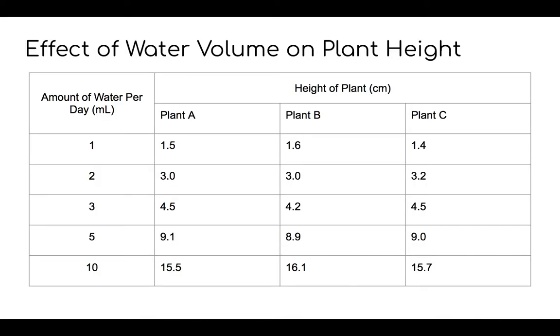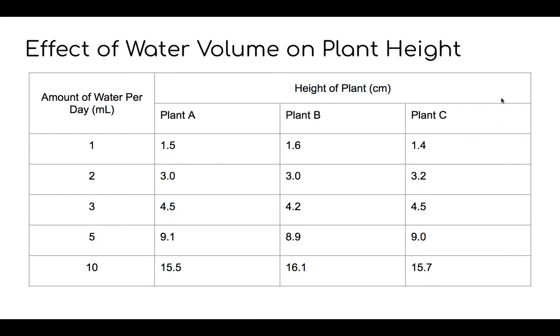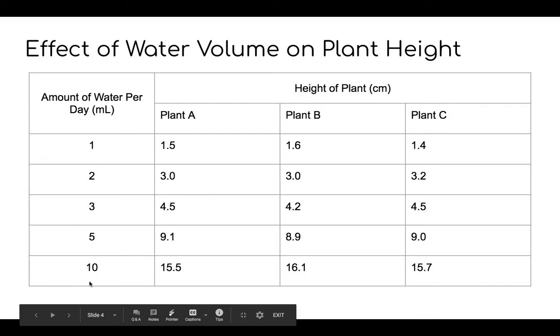So, we're going to look at this very simple example. Let's say that the lady that we were discussing went ahead and set up this experimentation where she watered her plants different volumes of water each day. So, some plants she gave less water, others she gave more. And then she, over time, tested the heights at which those plants grew. So, you can see that she did this with three different plants with five different volumes of water.